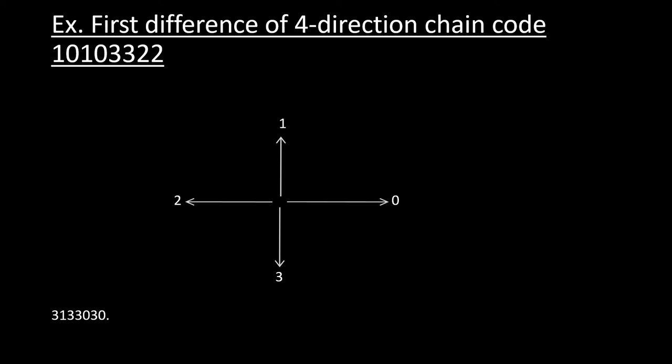Let us see this: 1 to 0 will move 3 units in the counter clockwise direction. So 3 units and 3 is written over here as you can see. From 0 to 1, we are moving 1 unit. 1 to 0 again: 1, 2, 3 units.